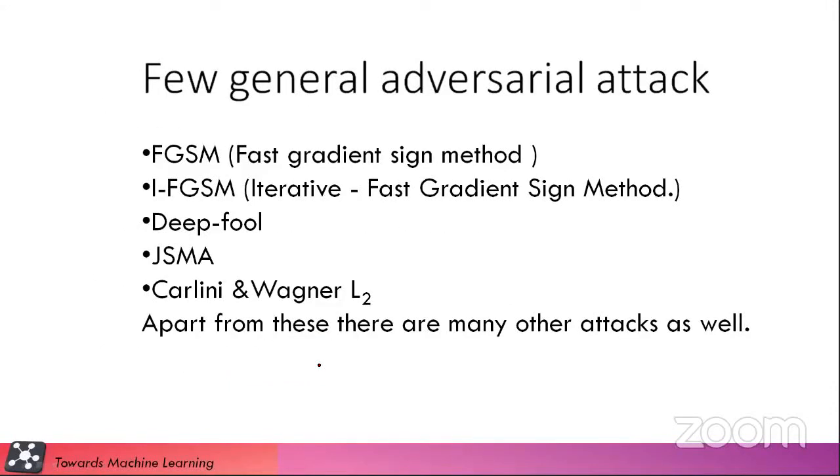So there are several other adversarial attacks also. So since FGSM is one of the fastest methods, we have covered it. We are not going to cover these four. These are little complex and do have some great mathematical explanation for the same.